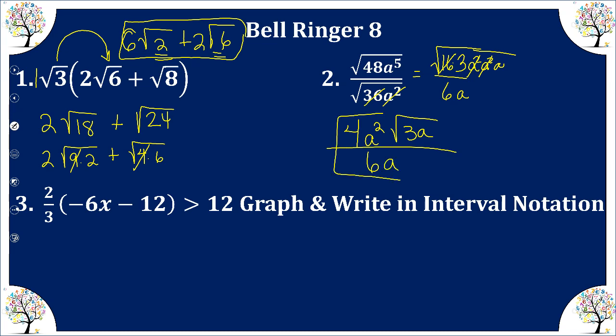So now we need to simplify this part of our expression. So 4 over 6 can simplify into 2 over 3. a squared divided by a simply gives me a to the 1st. And then I still have my radical 3a.